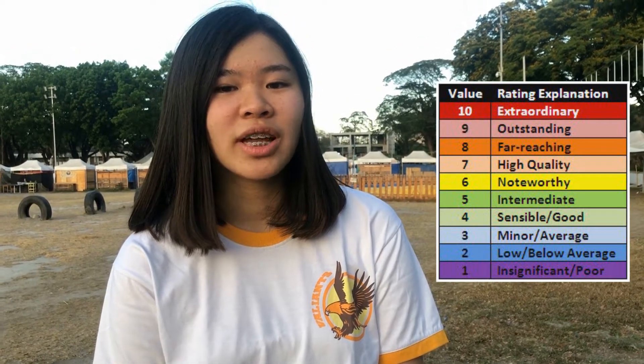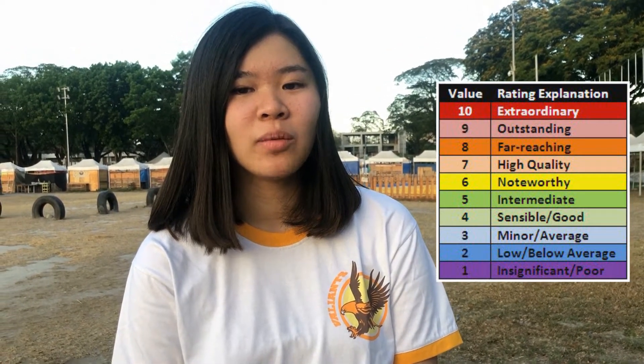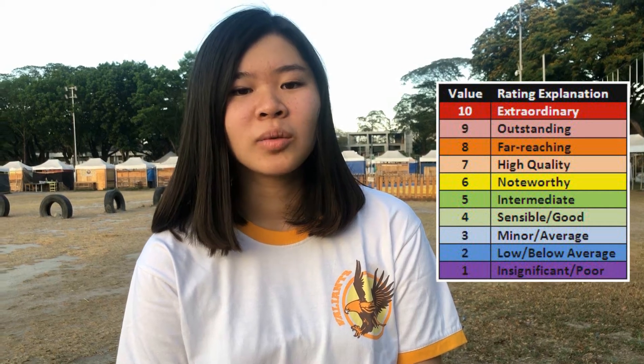Major earthquakes greater than magnitude 7 happen more than once per month. Great earthquakes, magnitude 8 and higher, occur about once a year. Ground shaking is the most familiar effect of earthquakes. It is a result of the passage of seismic waves through the ground and ranges from quiet, gentle, and small earthquakes to incredibly violent and large earthquakes.